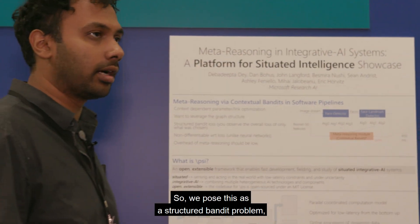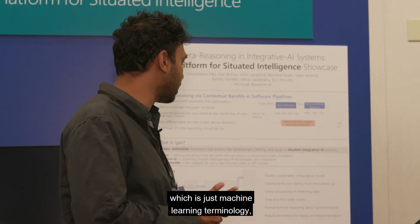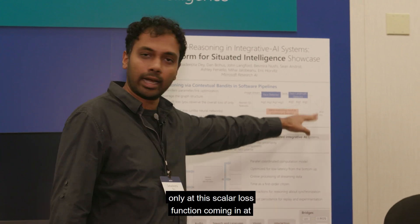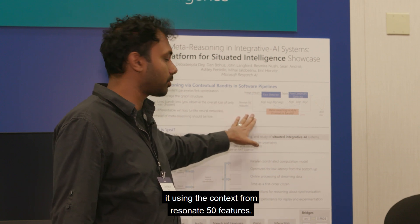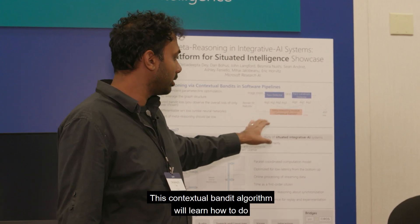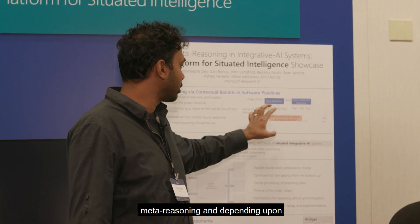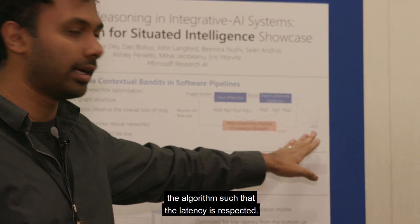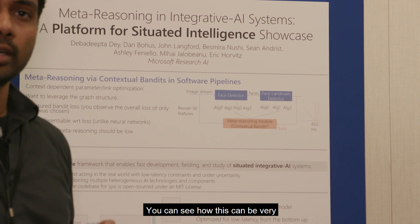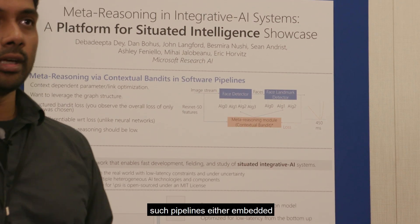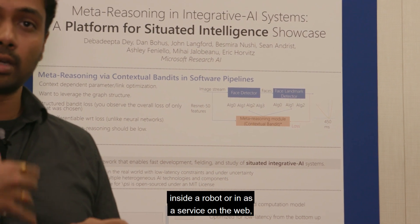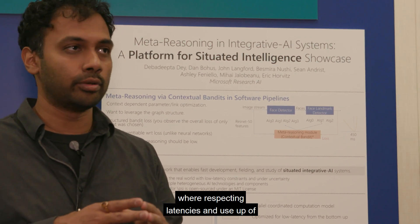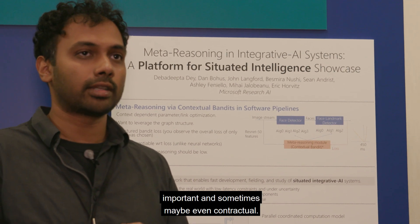We've reposed this as a structured bandit problem — machine learning terminology — which basically says that we can look at partial feedback on this scalar loss function coming in at the end of the pipeline and learn from it using context from ResNet-50 features. This contextual bandit algorithm will learn how to do meta reasoning and, depending upon what images are coming in, will learn to switch the algorithm such that the latency is respected. This is very important in scenarios where you are using such pipelines either embedded inside a robot or as a service on the web, like in Microsoft Cognitive Services, where respecting latency and performance guarantees is very important and sometimes even contractual.